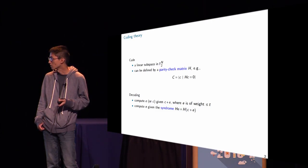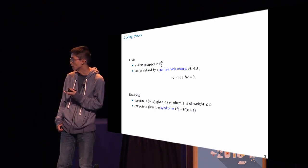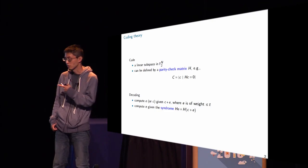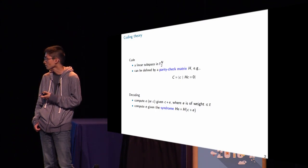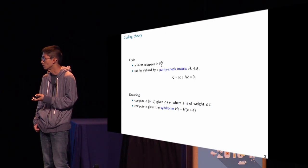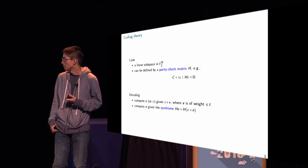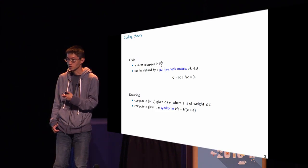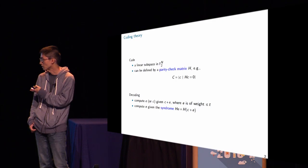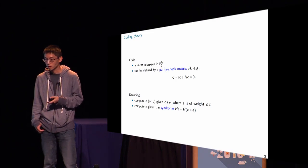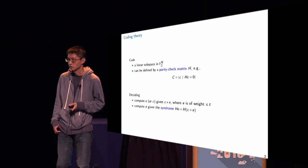So you can view decoding using two definitions. First one is that you're given a vector C plus E, where C is a code word and E is an error vector of small weight, like weight up to T or something. And your job is to recover E or equivalently C. Another view of decoding is that you're given a so-called syndrome, which is a matrix-vector product, like H times E or H times C plus E. And your job is similar, you want to recover E in this case. So we have two different views of decoding.